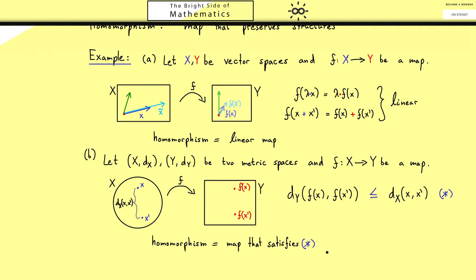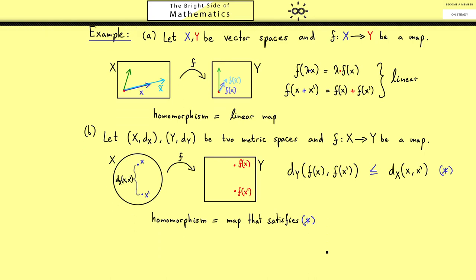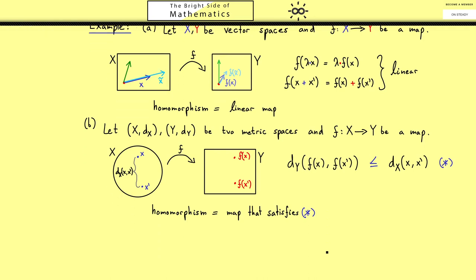So please keep these examples in mind and then I can finally tell you what an isomorphism is. You might already guess an isomorphism is just a special homomorphism. What we want in addition now is that we can also read it from the right hand side to the left hand side. In other words, the map has to be bijective.